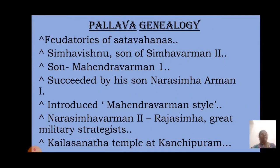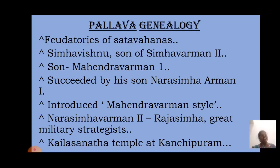Sources about the Pallavas include inscriptions such as the Mandagapattu cave, the Aihole inscription of Pulakesin II, and the Kasakudi plates. Literary sources include Mattavilasa Prahasana, Avanti Sundari Katha, Kalingatupparani, Periyapuranam, and Nandikalambagam. Foreign notices like the accounts of Chinese travelers such as Xuanzang also provide information about Pallava kings and their regions.